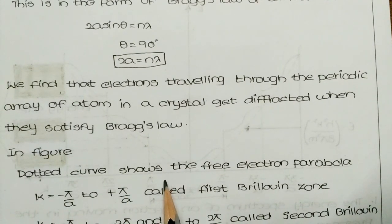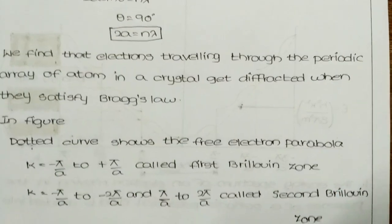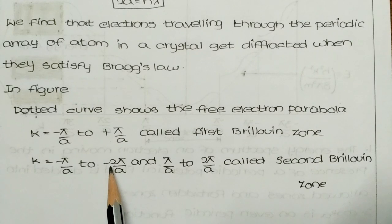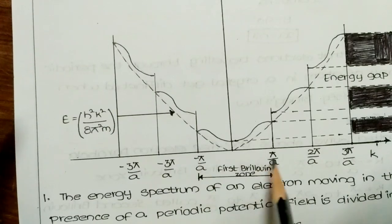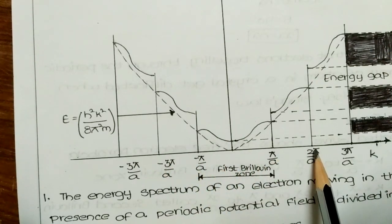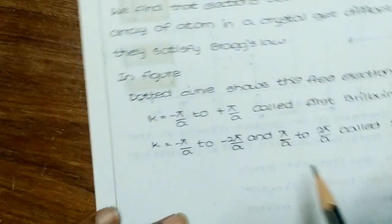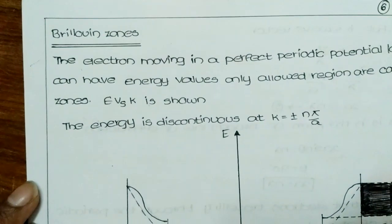In the figure, the dotted curve shows the free electron parabola. The region where k equals −π/a to +π/a is called the first Brillouin zone. The region where k equals −π/a to −2π/a and π/a to 2π/a is called the second Brillouin zone. So: first Brillouin zone is −π/a to π/a, and the second Brillouin zone extends from −2π/a to −π/a and from π/a to 2π/a.